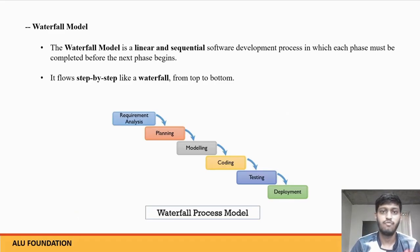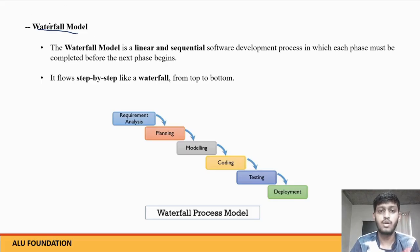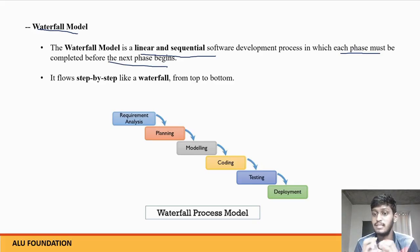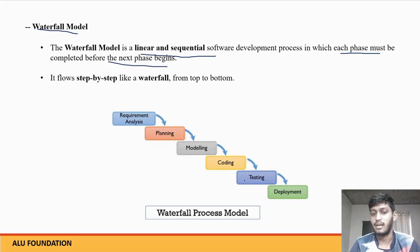The waterfall model goes from upwards to downwards, like a waterfall. The waterfall model is a linear and sequential software development process in which each phase must be completed before the next phase begins. It is the simplest model.